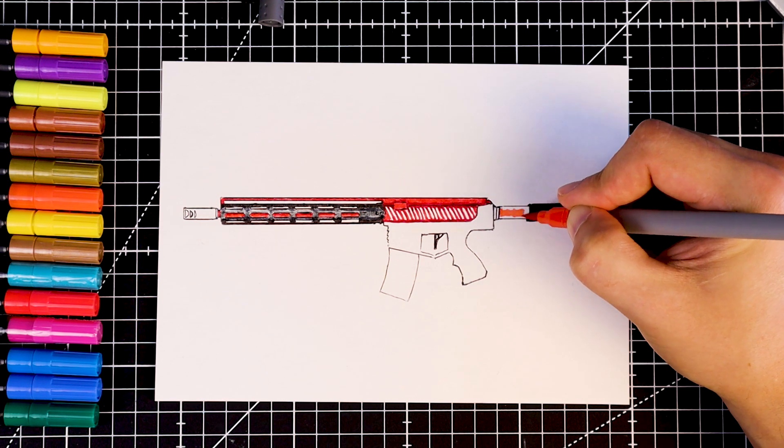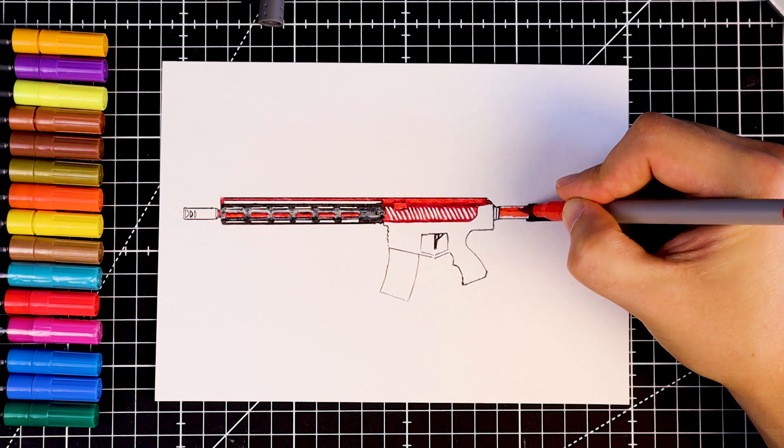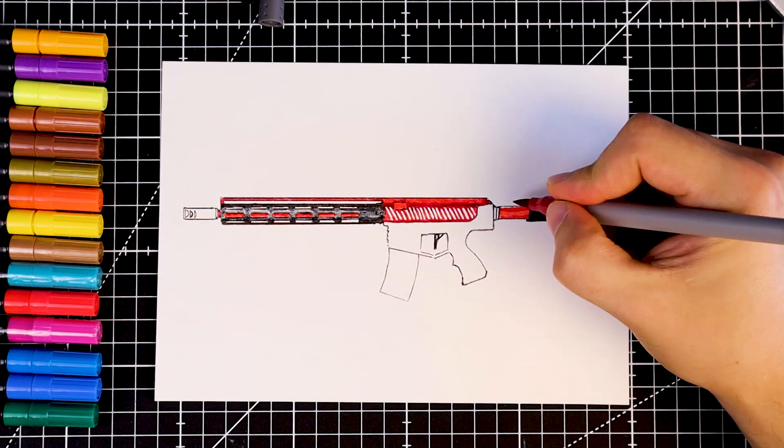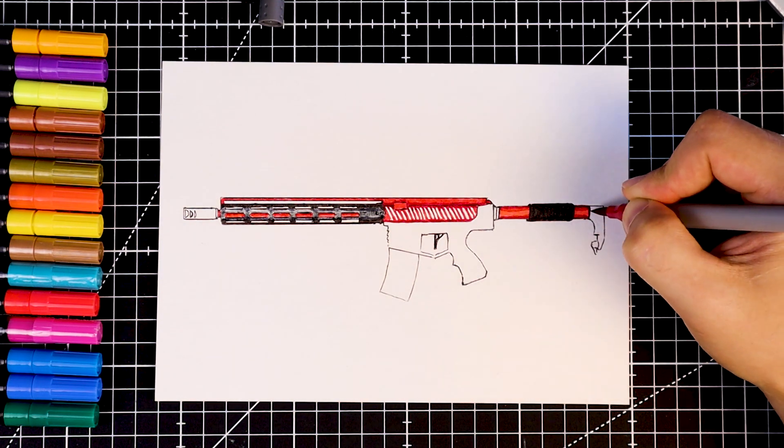We'll fill the stock with red. Start with light red in the centre. Then use a slightly darker red. Finally use a very dark red.